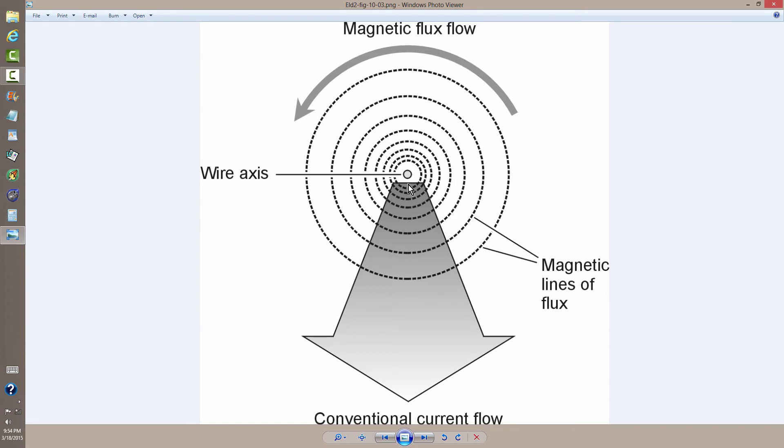Again, conventional current flowing toward you, but electrons flowing away from you. The direction of the magnetic flux is counterclockwise when the conventional current flows towards you. They also can use something called the right-hand rule. If you place your right hand so that your thumb points at you, your thumb represents the conventional current flow. You curl your fingers, and the direction in which your fingers curl is the direction of the magnetic flux flow.